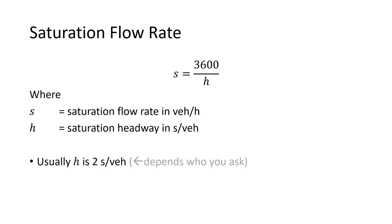Theoretically 1,900 is the max and 1,800 is often what we use. In an urban situation where people tend to be going slower, you're probably not going to get two seconds per vehicle — two and a half seconds isn't out of the realm. At locations with 20 to 25 mph speed limits where people aren't keeping gaps super small, two and a half seconds may be more common.